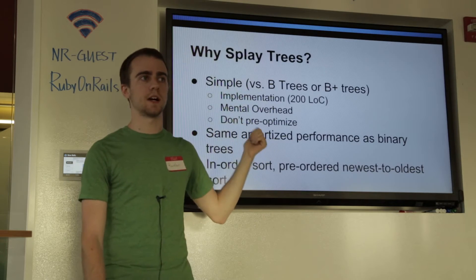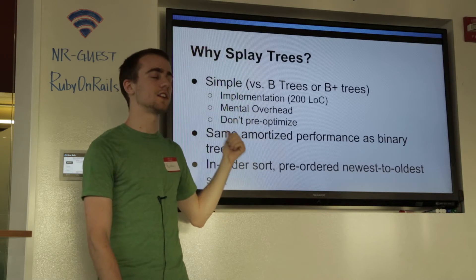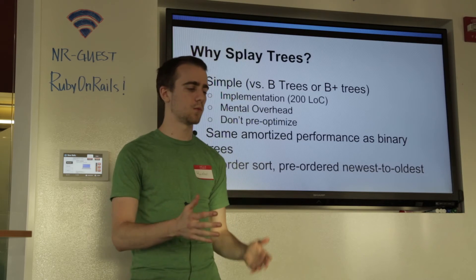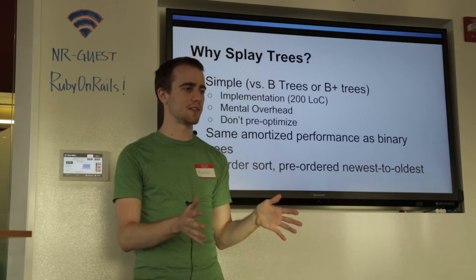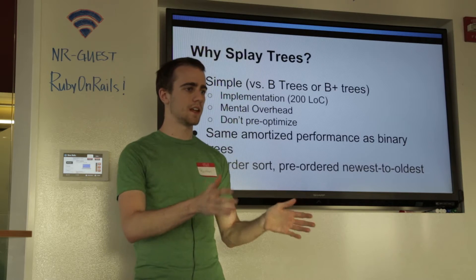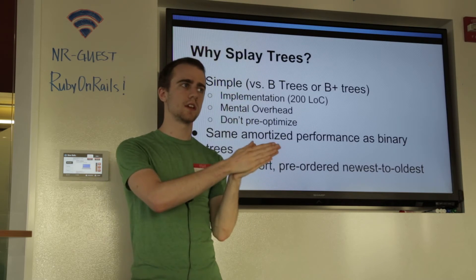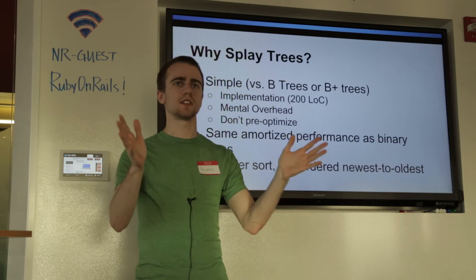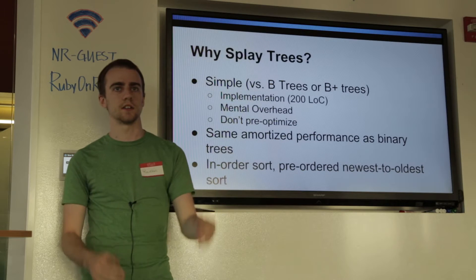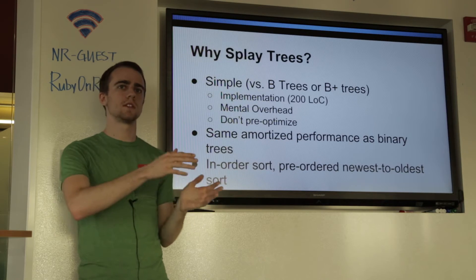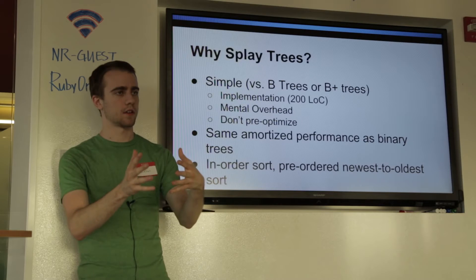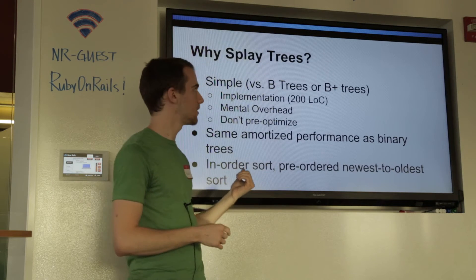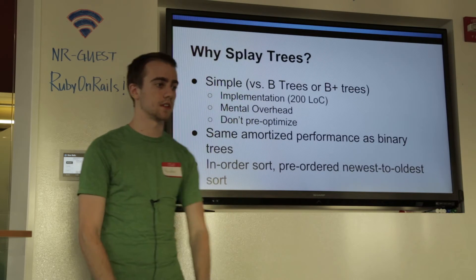The amortized performance of a splay tree is the same as a binary tree. What I mean by amortization — I'm vastly simplifying here — is that even though some use cases are going to be worse and some are going to be better, it averages out to the same kind of performance as a binary tree. So even though you're doing these kind of expensive splay operations on a tree, you have better performance because you are accessing nodes that were most recently inserted.